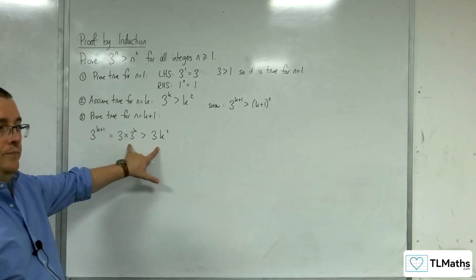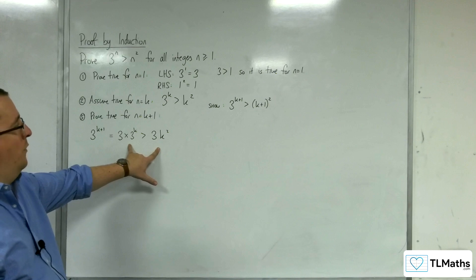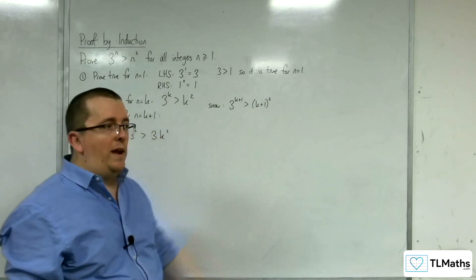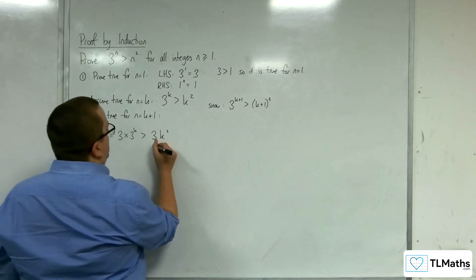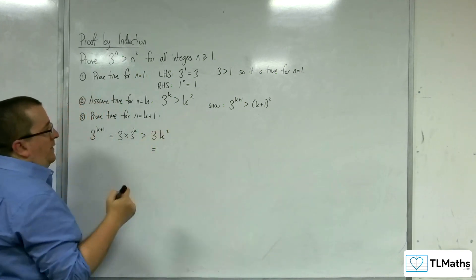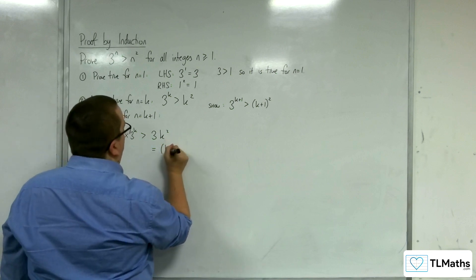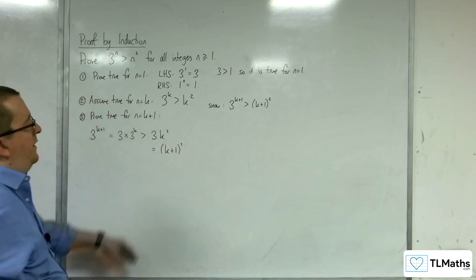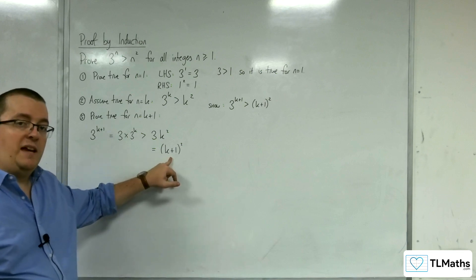Now remember what we want to arrive at. We want to arrive at this k plus 1 squared. So it would be good if I could write 3k squared using that as one of the terms. Now that's going to give me k squared plus 2k plus 1.